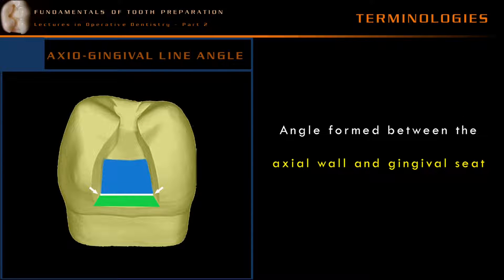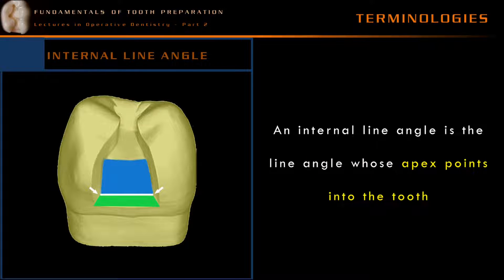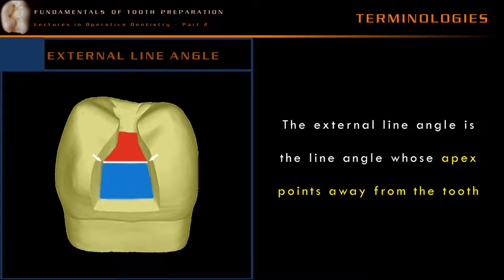An axial gingival line angle is an angle formed between the axial wall and the gingival seat. An internal line angle is a line angle whose apex points into the tooth — the apex of the line angle faces the internal aspect, close to the pulp of the tooth. So the axial gingival line angle is an internal line angle. An external line angle is a line angle whose apex points away from the tooth. The axial pulpal line angle is an external line angle, as its apex faces towards the external surface of the tooth.